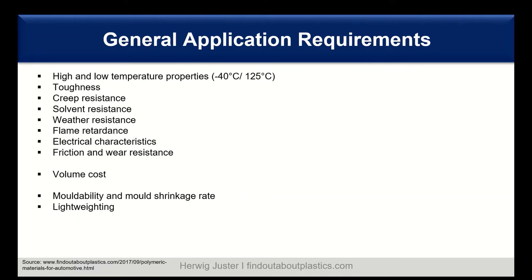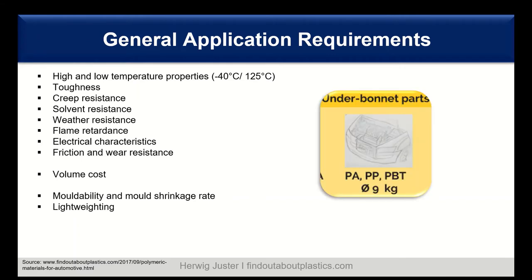In terms of processing, we need good moldability and also feasible mold shrinkage rates — as low as possible — while also keeping lightweighting and metal replacement in mind. All together, the under-bonnet parts make around nine kilos in an average car. The majority is polyamides — aliphatic as well as semi-aromatic — and we also have polyolefins and some other engineering polymers such as PPT.